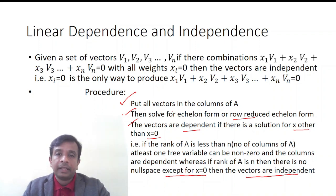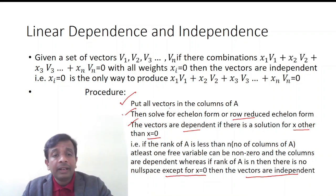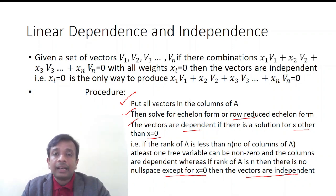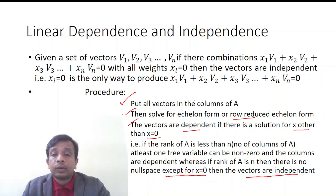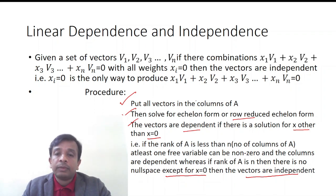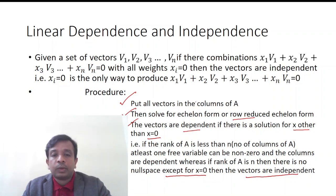The next concept in the course is linear dependence and independence of vectors. Given a set of vectors v1, v2, v3 up to vn, if their combination x1*v1 + x2*v2 + x3*v3 + ... + xn*vn = 0 occurs only with all weights xi = 0, then the vectors are independent.